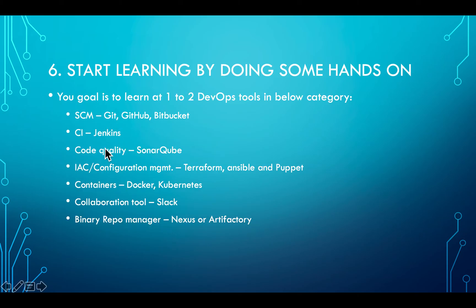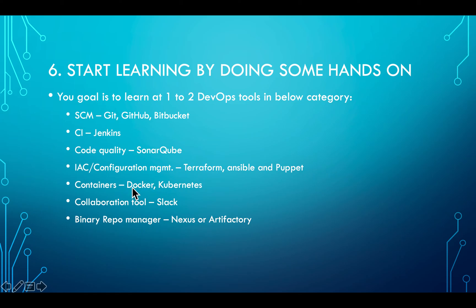It is important that you have some knowledge in each category. From SCM — source code management — it is good to have Git, GitHub, and Bitbucket knowledge. From a continuous integration standpoint, you need Jenkins knowledge. For code quality, SonarQube is one of the top tools. For infrastructure automation and configuration management, there are three tools: Terraform, Ansible, and Puppet. From a containers perspective, start with Docker, and then scale up to Kubernetes. For collaboration, Slack is one of the popular tools. For binary repository management, you can learn either Nexus or Artifactory — these are the top two tools in that space.